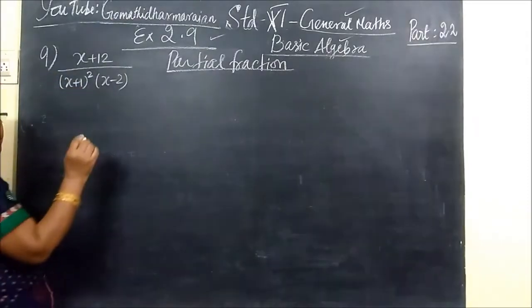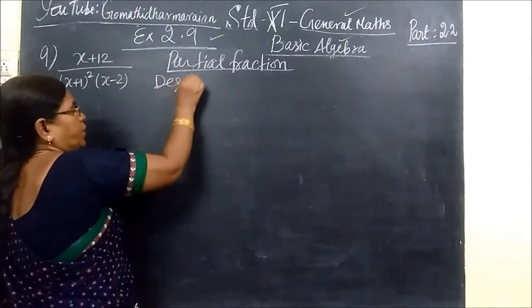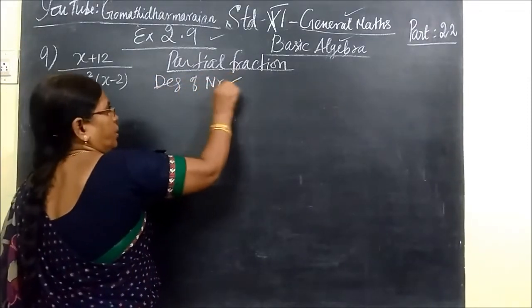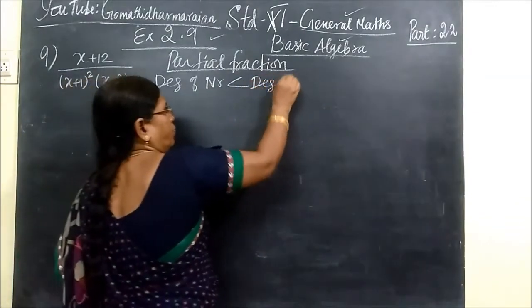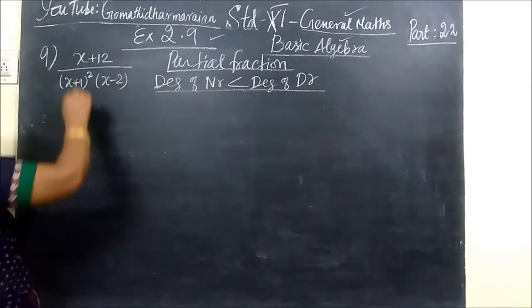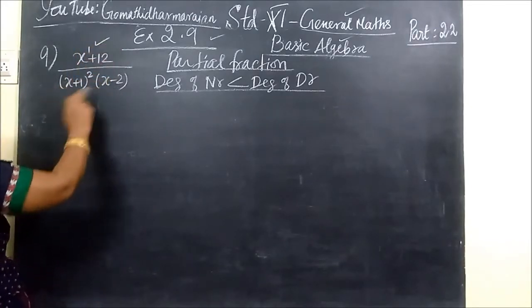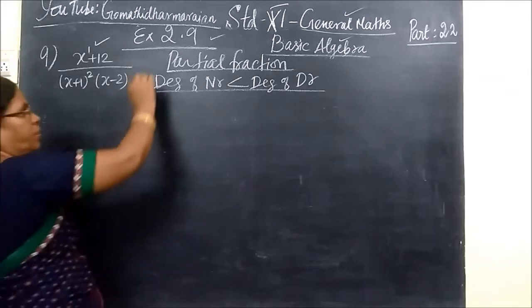First of all we must see degree of numerator should be less than degree of denominator. This is the condition. Degree of numerator 1, degree of denominator 2. So that's the condition is satisfied.